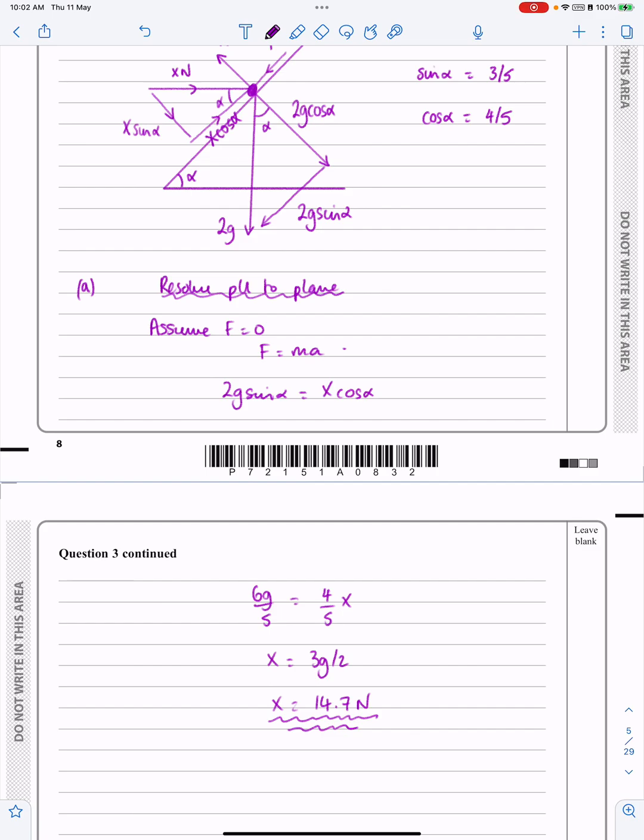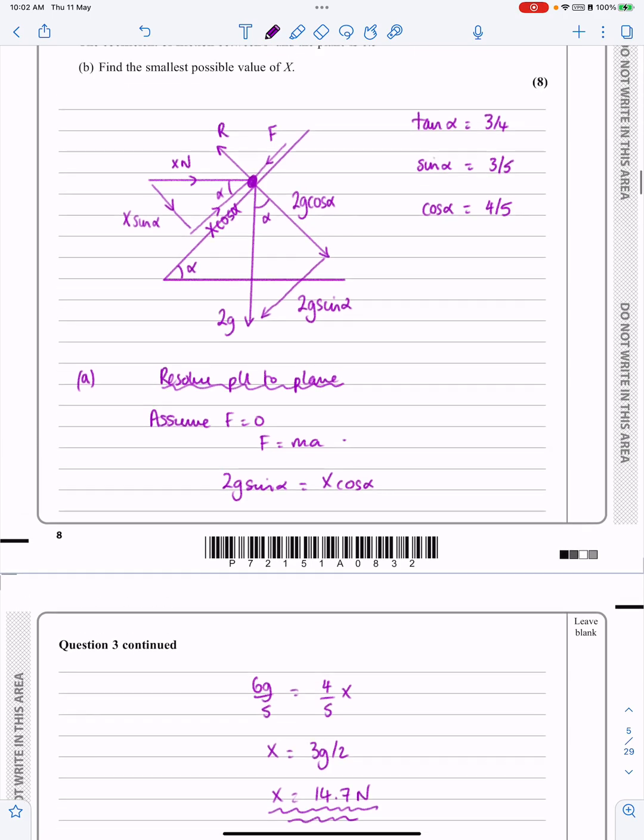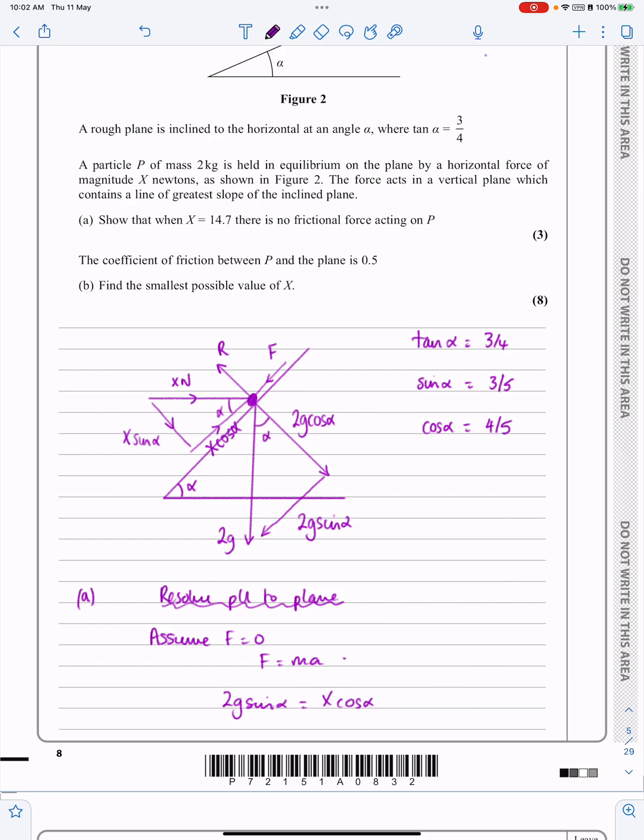First part done, slightly different to the way that we do normal ones, but that's fine. Now part B says coefficient of friction between P and the plane is 0.5, so let's put that on: coefficient of friction is equal to 0.5.